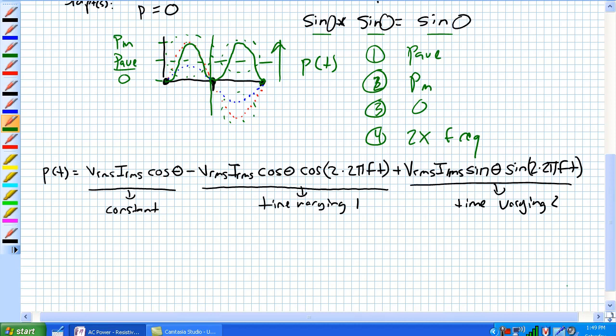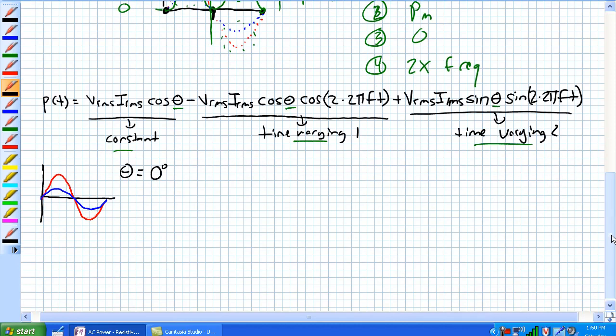Now, let's go ahead and use that giant formula from up top. We've got our constant, our time varying 1, and our time varying 2. Remember that theta in all of these circumstances is how much voltage leads or lags the current. If we remember right, in our purely resistive circuit, voltage peaks and current simultaneously peaks. There is no phase shift between voltage and current in a purely resistive load, so our theta is equal to zero degrees.